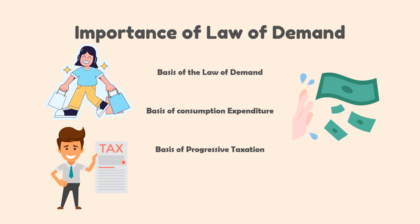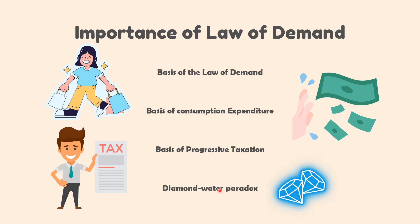Number four, the diamond-water paradox. This means that though water is more useful than diamond, still the price of diamond is more than that of water. The explanation lies in the law of diminishing marginal utility. The price of a commodity is determined by its marginal utility. Since the supply of water is abundant, the marginal utility of water is very low and so is its price. On the contrary, the supply of diamond is limited, so the marginal utility of diamond is very high and therefore its price is very high.